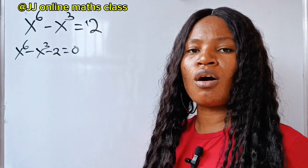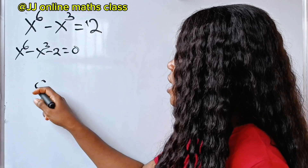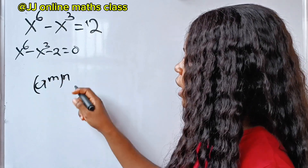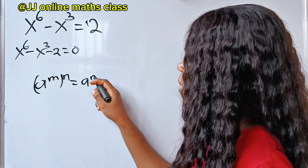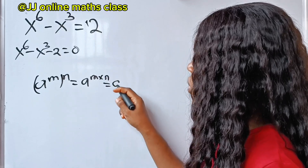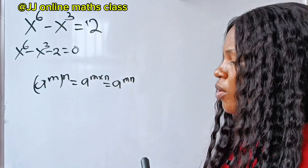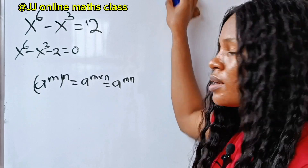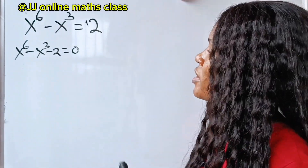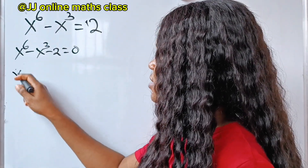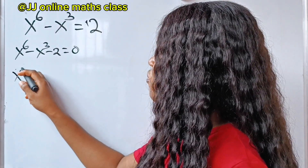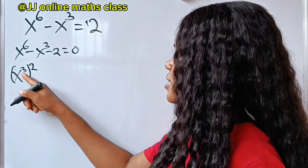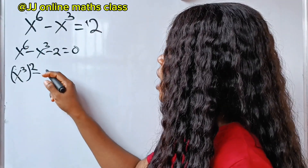Recall the law of indices that states that a to the power of m, raised to the power of n, is equal to a to the power of m times n, which is equal to a to the power of mn. Let's apply this here. That means we can write x to the power of 6 as x to the power of 3, raised to the power of 2, since 3 times 2 still gives us 6.